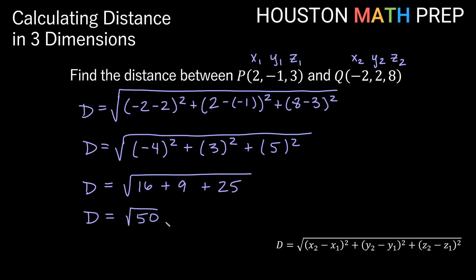And we can actually simplify the square root of 50. 25 goes into 50, and that's a perfect square, so we can pull out the square root of 25, which is 5. We actually get a reduced version of 5√2 units for our answer for the distance between these two points.